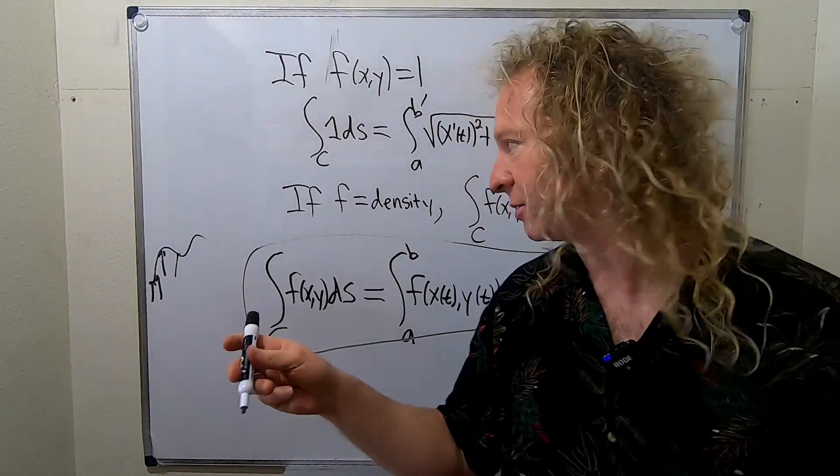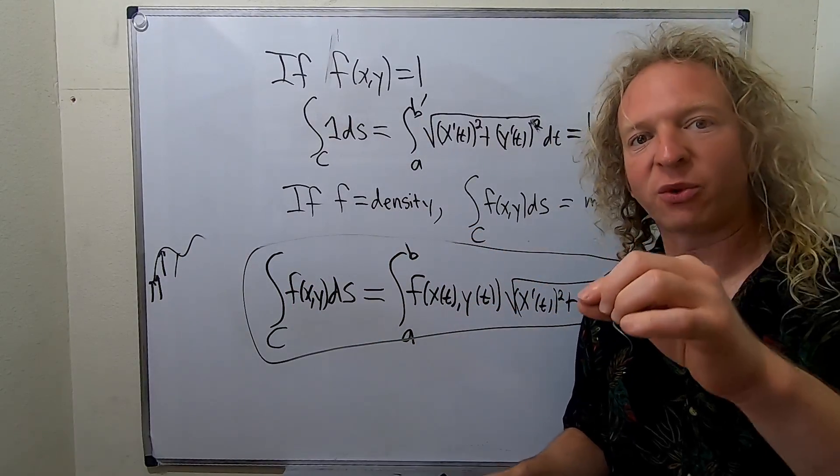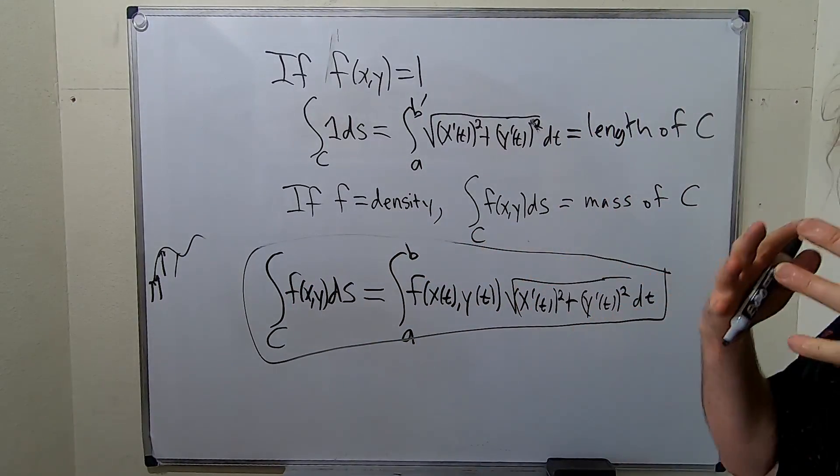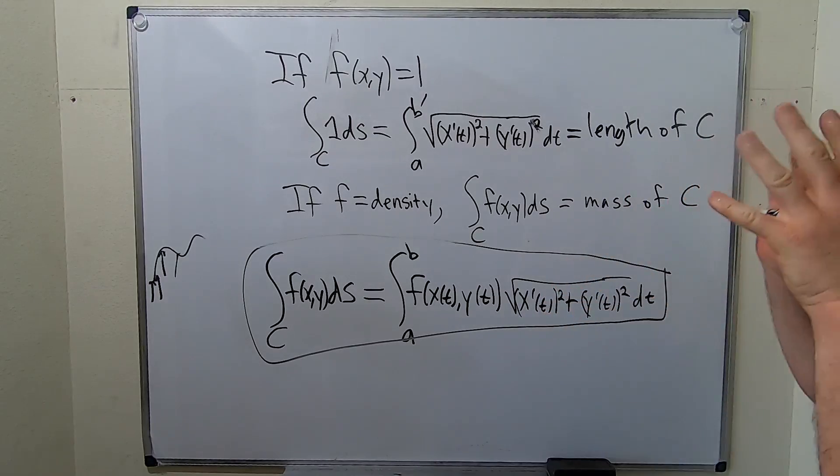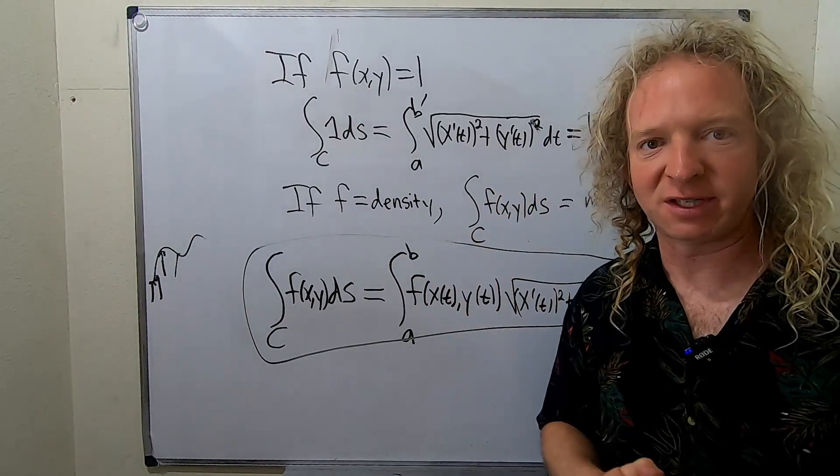So it'll give you the mass of the wire. So if f is the density of the wire, this will give you the actual mass of the wire. So this does come up in physics. People use this in physics a lot.